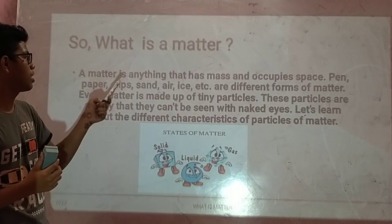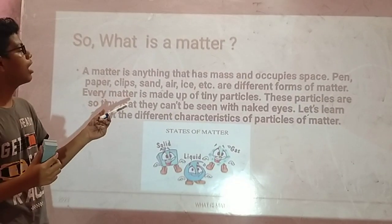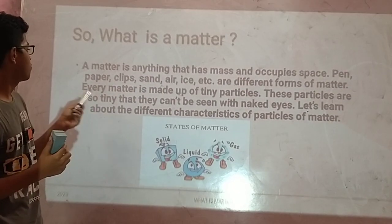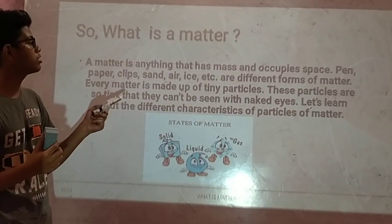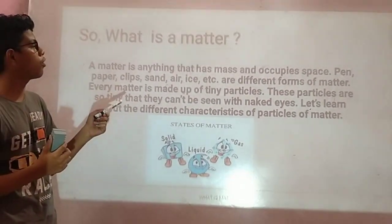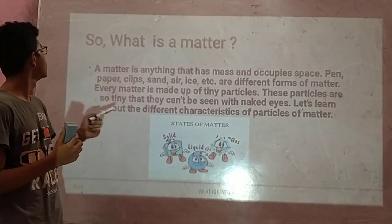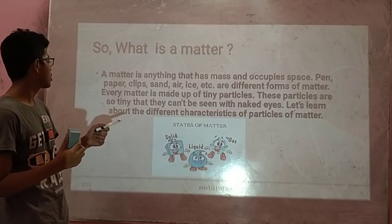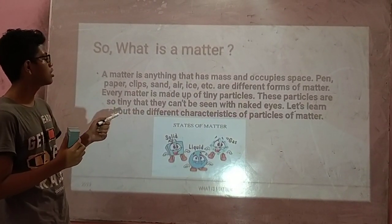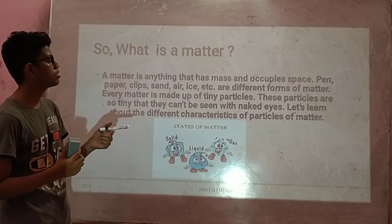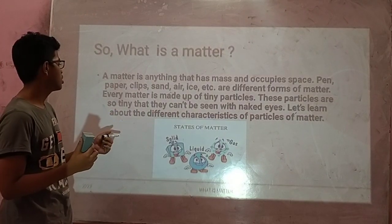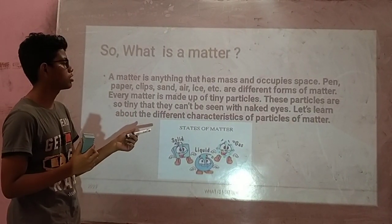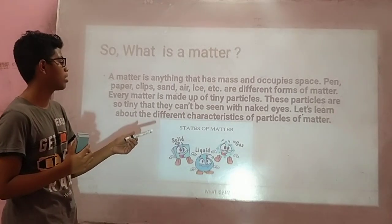So, what is matter? Matter is anything that has mass and occupies space — pen, paper clips, sand, air, ice, etc. are different forms of matter. Every matter is made up of tiny particles. These particles are so tiny that they cannot be seen with the naked eye. Let's learn about different characteristics of particles of matter.